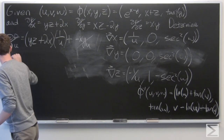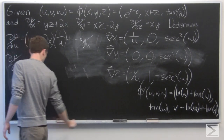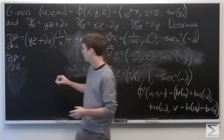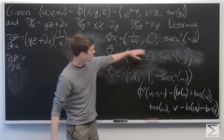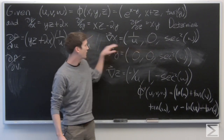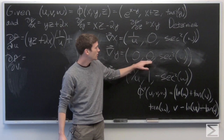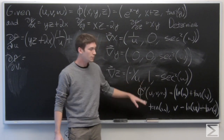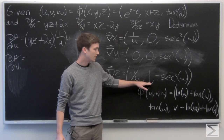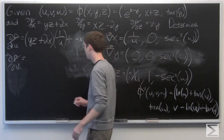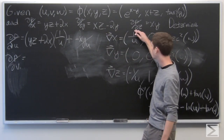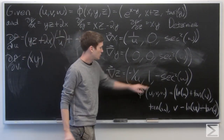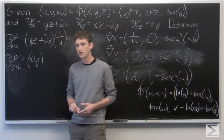We want to find the partial derivative of p with respect to v. Looking at our gradient vectors, the partial derivative of x with respect to v is 0, the partial derivative of y with respect to v is 0, and the partial derivative of z with respect to v is 1. So the only component that will affect our result is the z component. We take the partial derivative of p with respect to z, which is xy, times 1. So the partial derivative of p with respect to v is just xy.